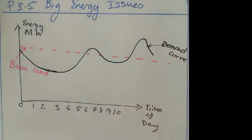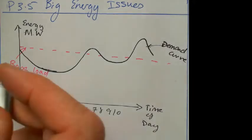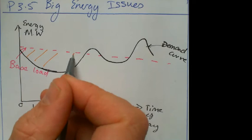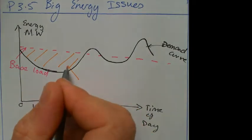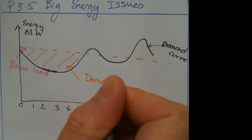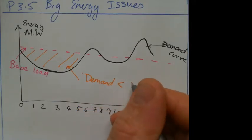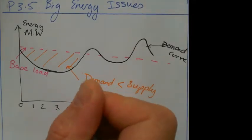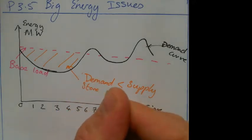And then on top of that base load you've got things like you can increase your supply, and you've got two ways of increasing supply. Either you can burn more gas, that's one of the fastest ways to increase your supply, or you could release some stored energy. What I mean by that is in this section here, the demand is less than the supply, so you want to store the excess.